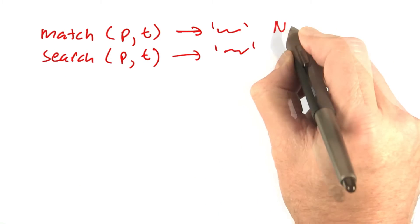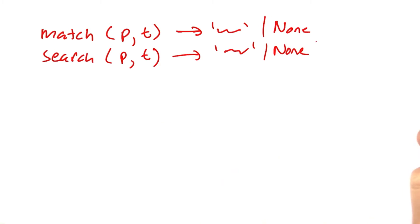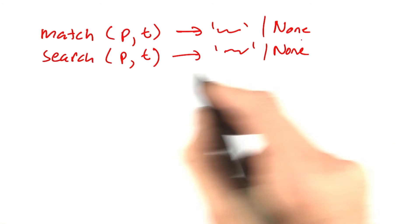If they don't match, then they return none. We've also defined an API of functions to create patterns.